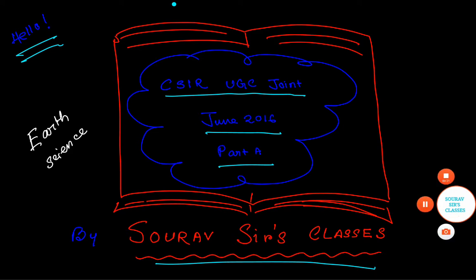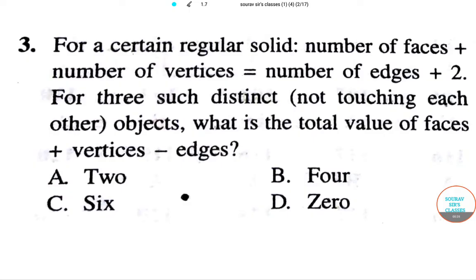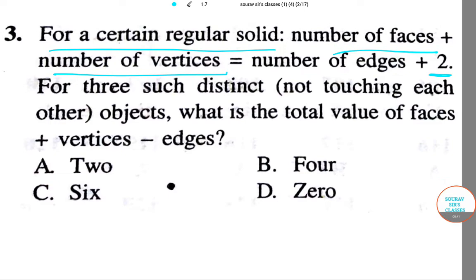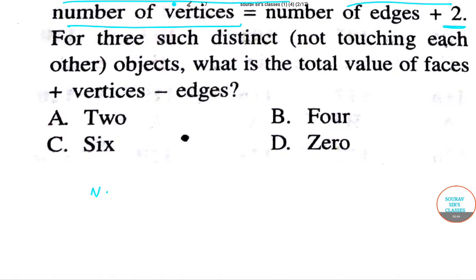There is an interesting question. Let's read it. For a certain regular solid, number of faces plus number of vertices is equal to the number of edges plus two. So let's write it down first: number of faces plus number of vertices equals number of edges plus two.